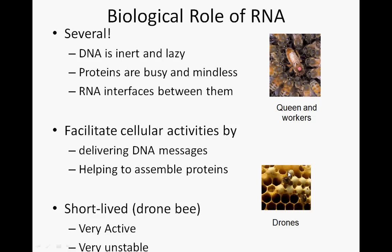RNA in this analogy is best thought of as a drone bee. Drone bees interface between the queens and the workers — they're the fathers of the workers. Drone bees don't have a long-lived role in the hive; they're very, very active for an extremely short period of time and then they die off. So they're critical and very active, but very unstable — they don't hang around that long. RNA facilitates cellular activities by delivering the messages encoded in DNA and also helping to actually assemble the proteins. Critical, but very unstable.